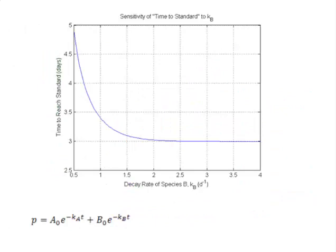And we see that that time comes down fairly rapidly as the decay rate of species B increases but then it levels off.